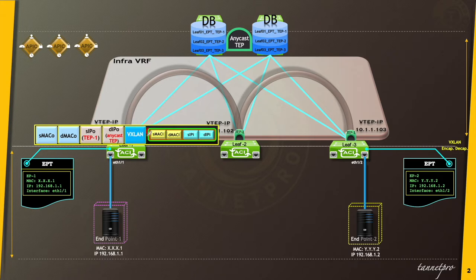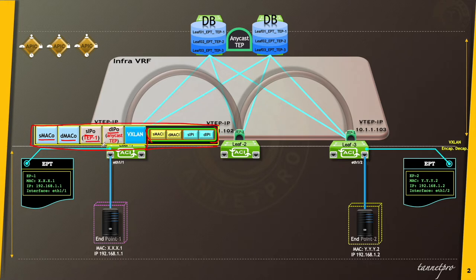What does the packet look like in that case? The original packet goes into the inner header, and that entire packet is encapsulated, making another outer header. The outer header has a separate source MAC address, destination MAC address, source IP, and destination IP. The source IP is the TEP address — every switch has one tunnel endpoint with one IP address. Since this leaf switch is sending this traffic, its source is its own TEP address.